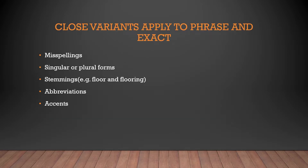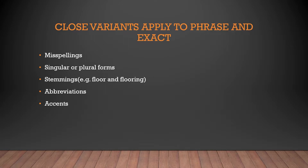In terms of variants — such as spelling mistakes, singular or plural versions of the word, stemming, abbreviations, or accents — all of these will trigger an ad, and this is applicable for both phrase and exact match. So you don't have to add all the misspellings or singular and plural versions of your keyword. Google will automatically take care of misspellings, plural forms, stemmings, abbreviations, and accents.